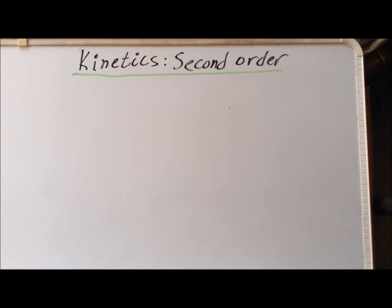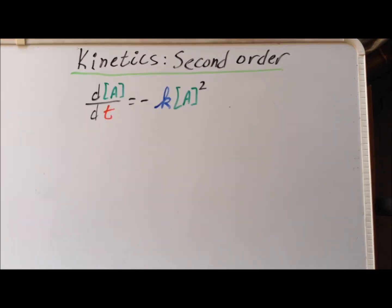And then we are going to derive an expression for the half life of a second order reaction. The differential form for a second order reaction involving only one reactant A is d[A]/dt, the change in the concentration of A with time, equals minus k times [A]². And it is this power of 2 that makes it a second order reaction.